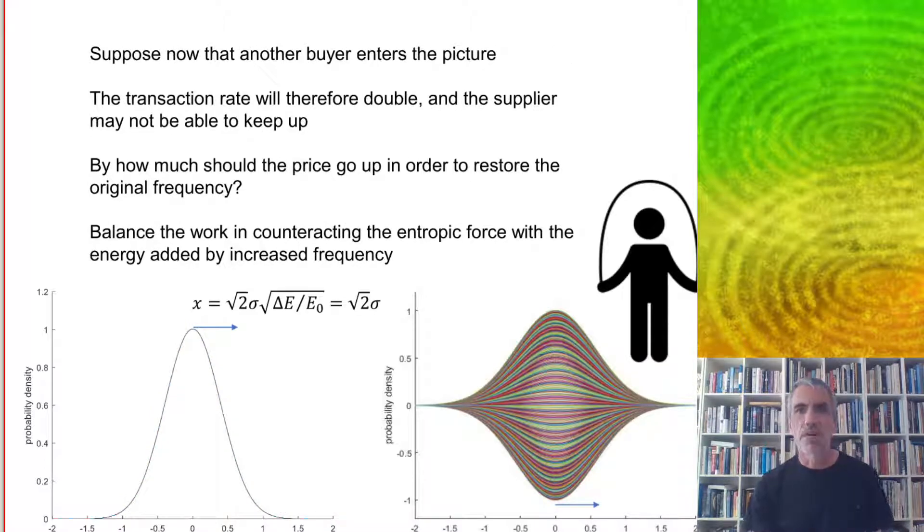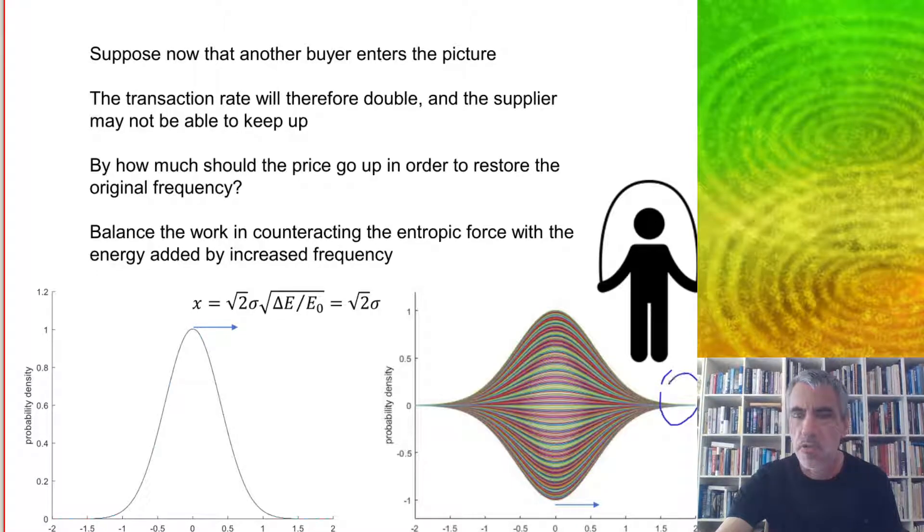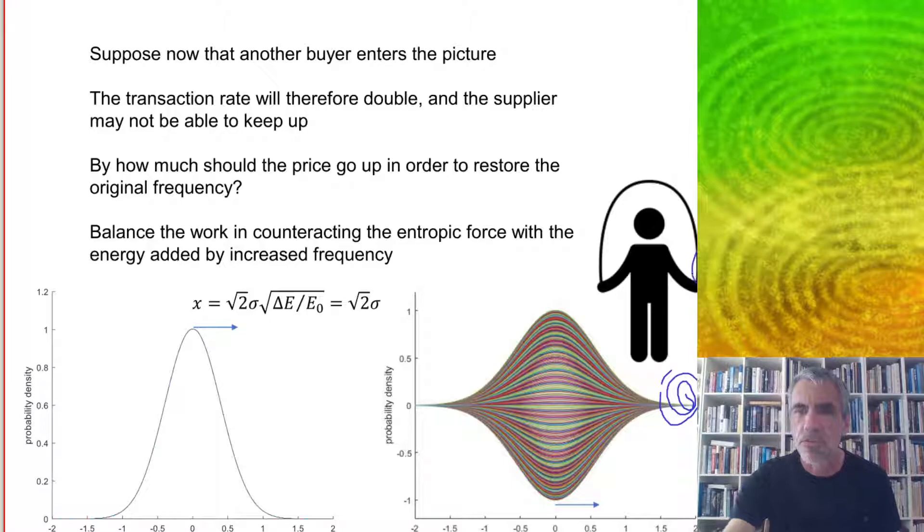But suppose now that another buyer enters the picture, so the transaction rate will therefore double and the supplier may not be able to keep up. By how much should the price go up in order to restore the original frequency? This frequency rate is increasing, meaning this person is skipping faster and faster, so we have more energy.